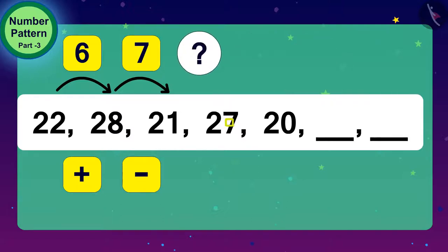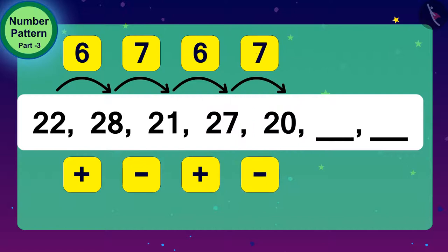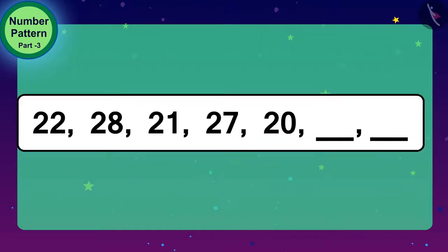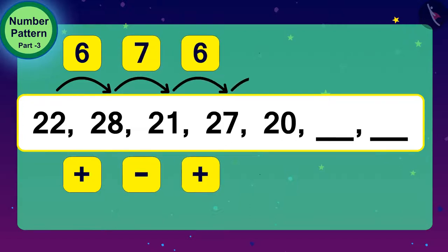What will we do to get 27 from 21? We will add 6 digits to 21. And how do we get 20 from 27? 7 is subtracted from 27. Children, do you now understand the unique rule of this number pattern? Well, you are thinking right. This number pattern is being carried forward by adding 6 once and subtracting 7 the second time.